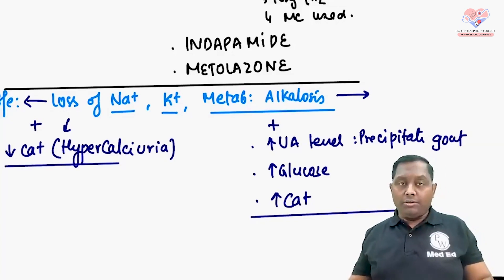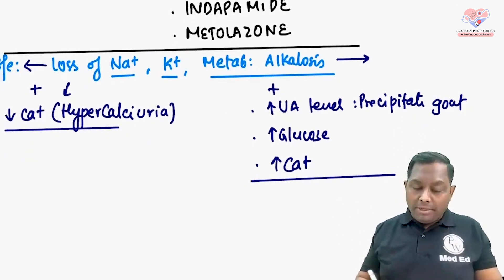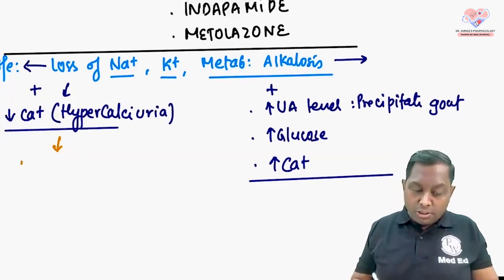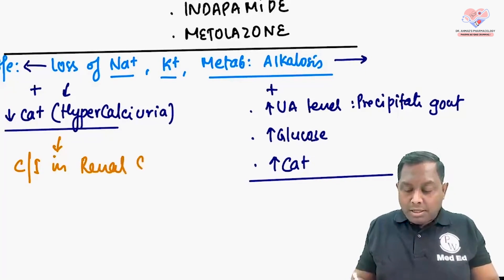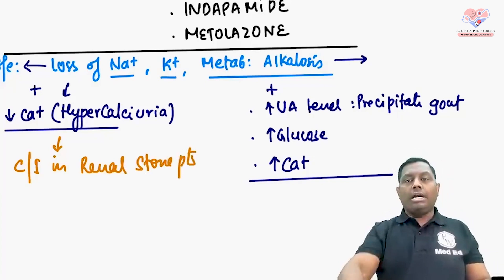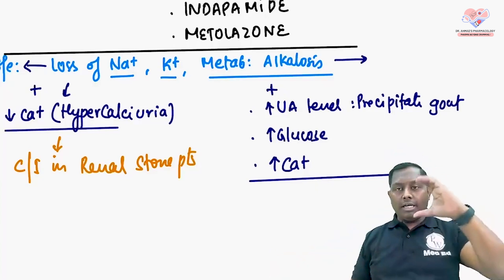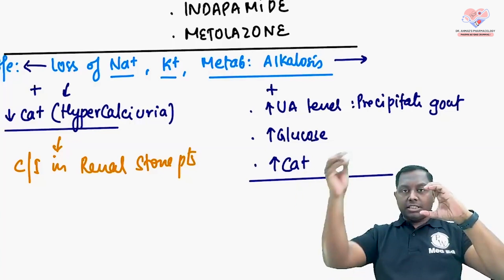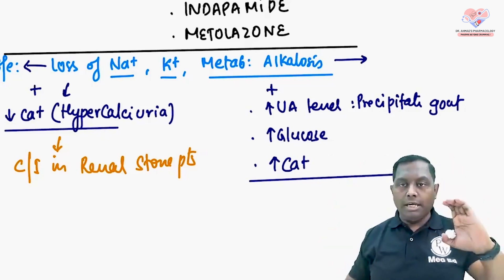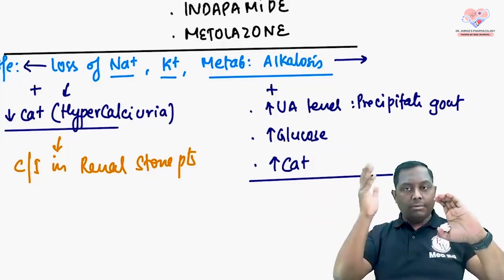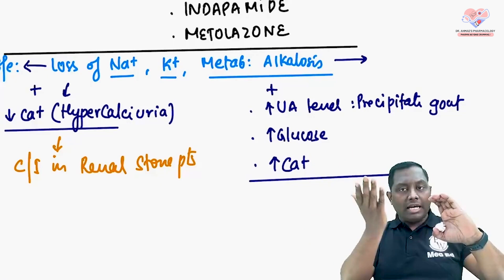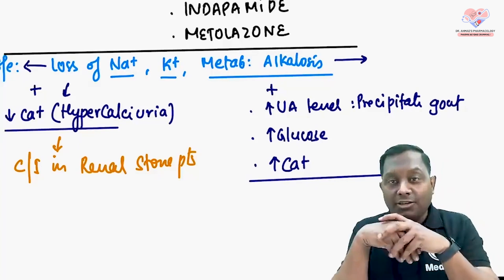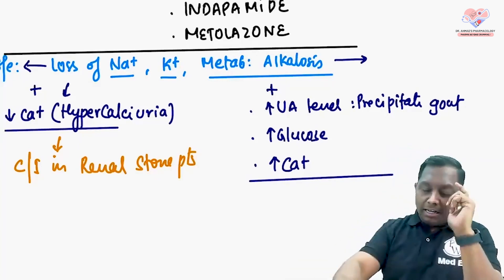Loop diuretics cause loss of calcium, which explains why in exams the question arises: which diuretic is preferred and which is contraindicated in a patient with renal stones? Loop diuretics are contraindicated in renal stone patients because they cause further loss of calcium into the urine, which can precipitate and saturate calcium in the renal parenchyma, worsening renal stones. They are also contraindicated in known hypocalcemia patients.